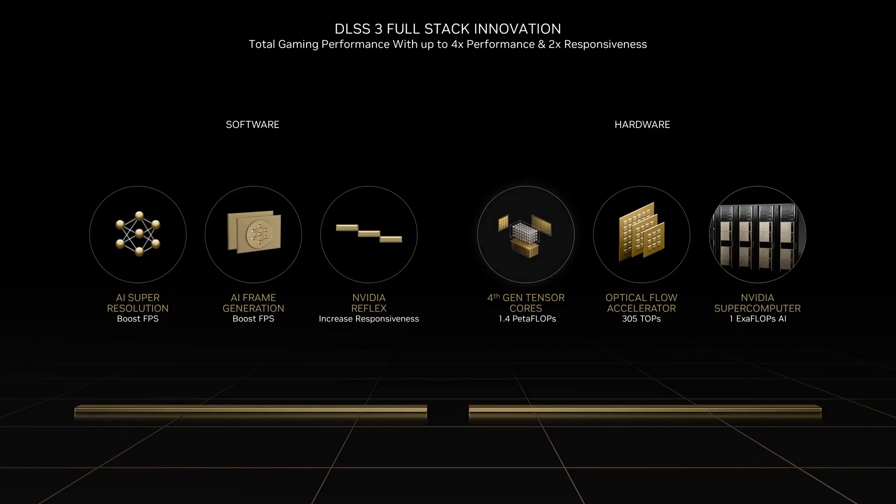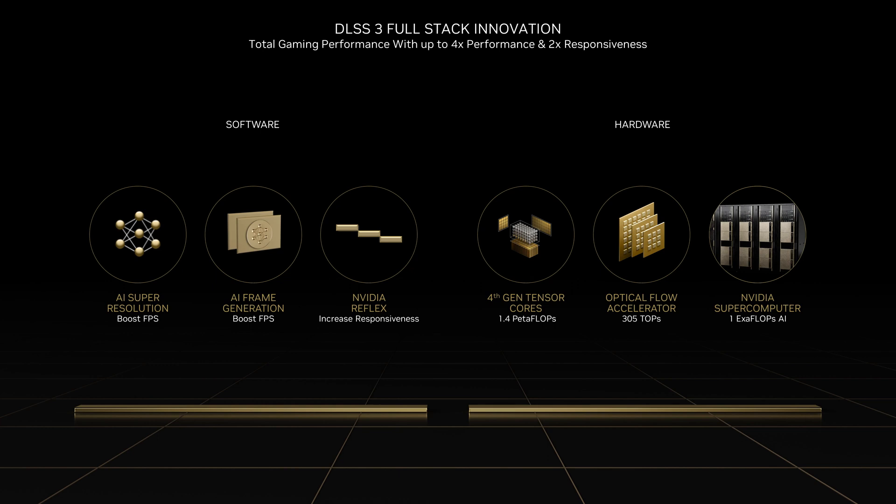DLSS 3 is also powered by three hardware components. First, our fourth generation Tensor Cores provide up to 1.4 petaflops of AI, which is necessary in order to run multiple neural networks simultaneously to generate frames and do super resolution in DLSS 3. The second component is the Optical Flow Accelerator, which provides more than twice the throughput of older generations while also increasing quality. This is essential for the frame generation task.